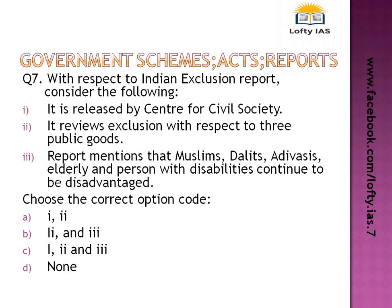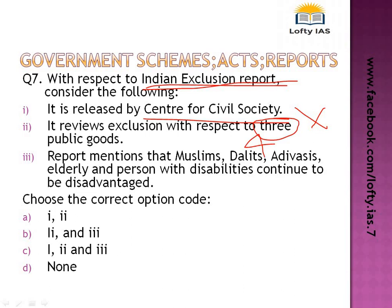Question 7: with respect to the Indian Exclusion Report. This report considers which people have been excluded or which factors need the government's attention. The first statement says it is released by the Centre for Civil Society — this is incorrect; it is published by the Centre for Equity Studies. The second statement says it reviews exclusion with respect to 3 public goods — this is also wrong, as it covers 4 public goods: pension for the elderly, digital access, agricultural land, and legal justice for undertrials. The third statement — the report mentions that Muslims, Dalits, Adivasis, elderly, and persons with disabilities continue to be disadvantaged — is correct. Answer: statement 3 only.